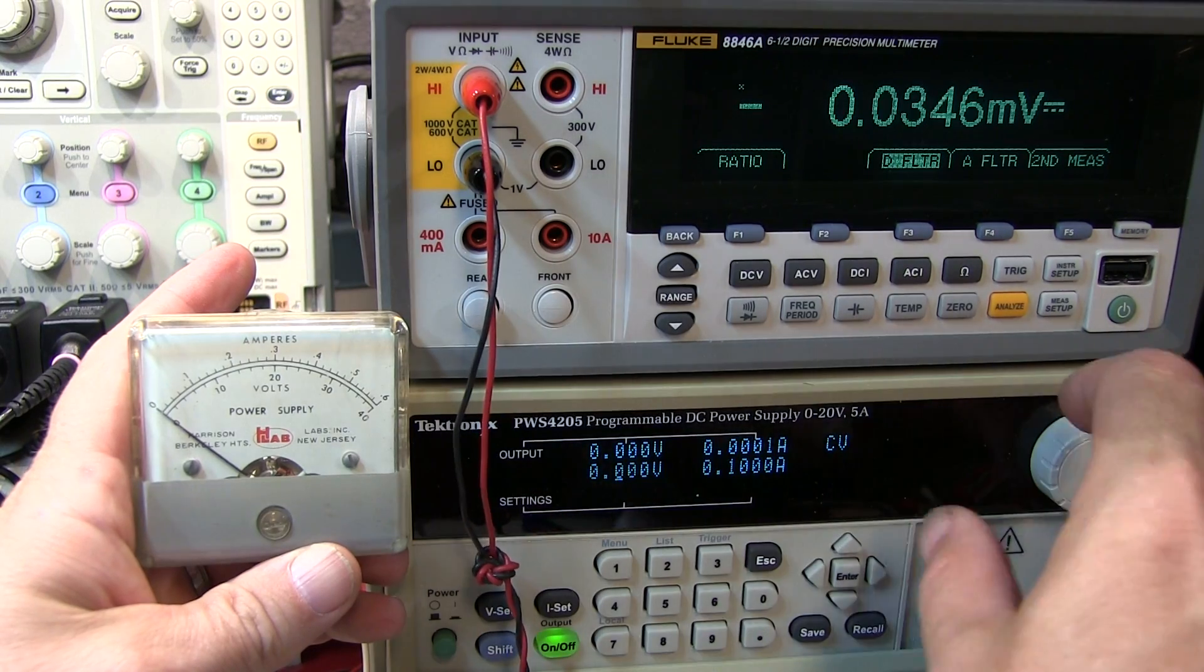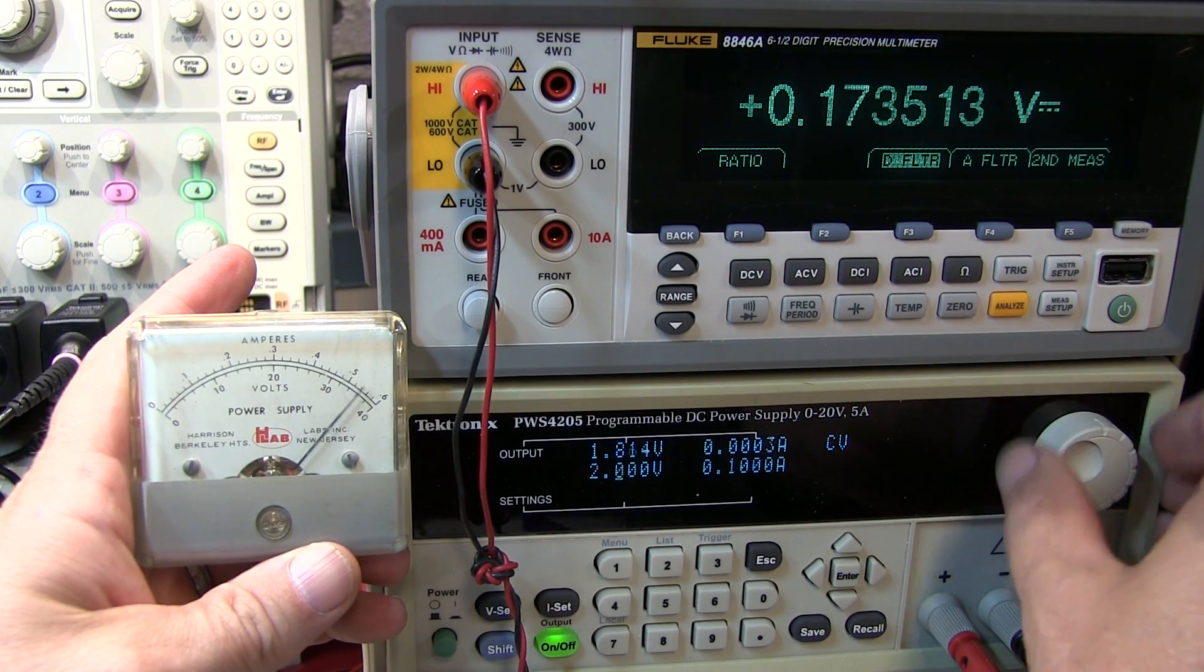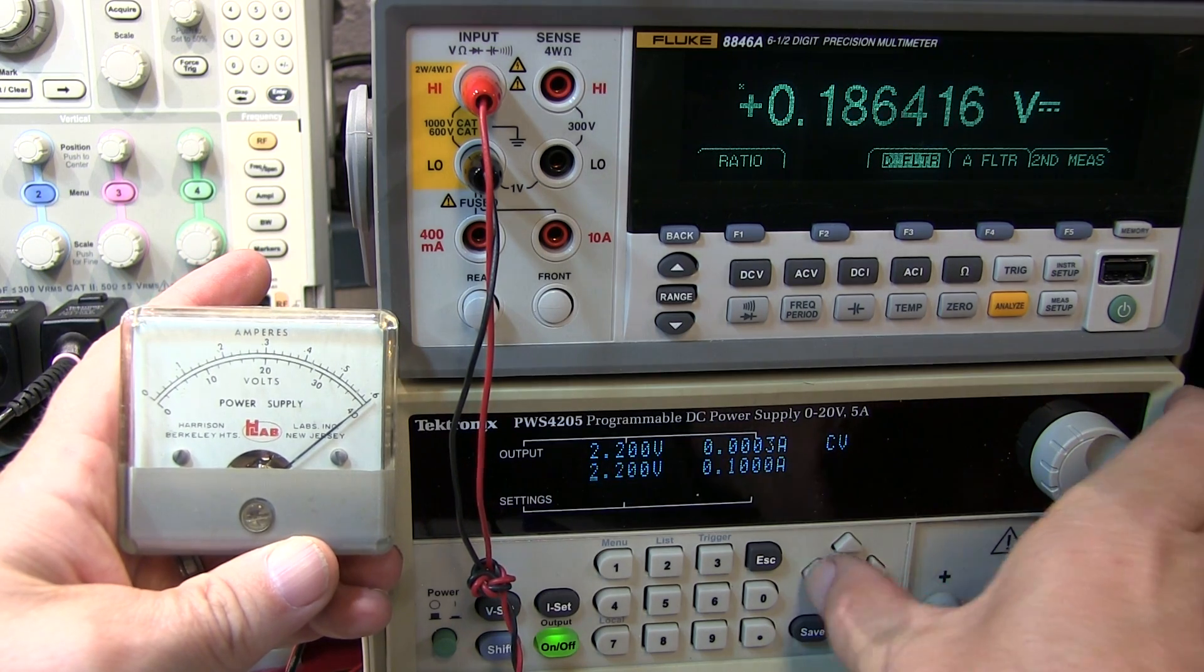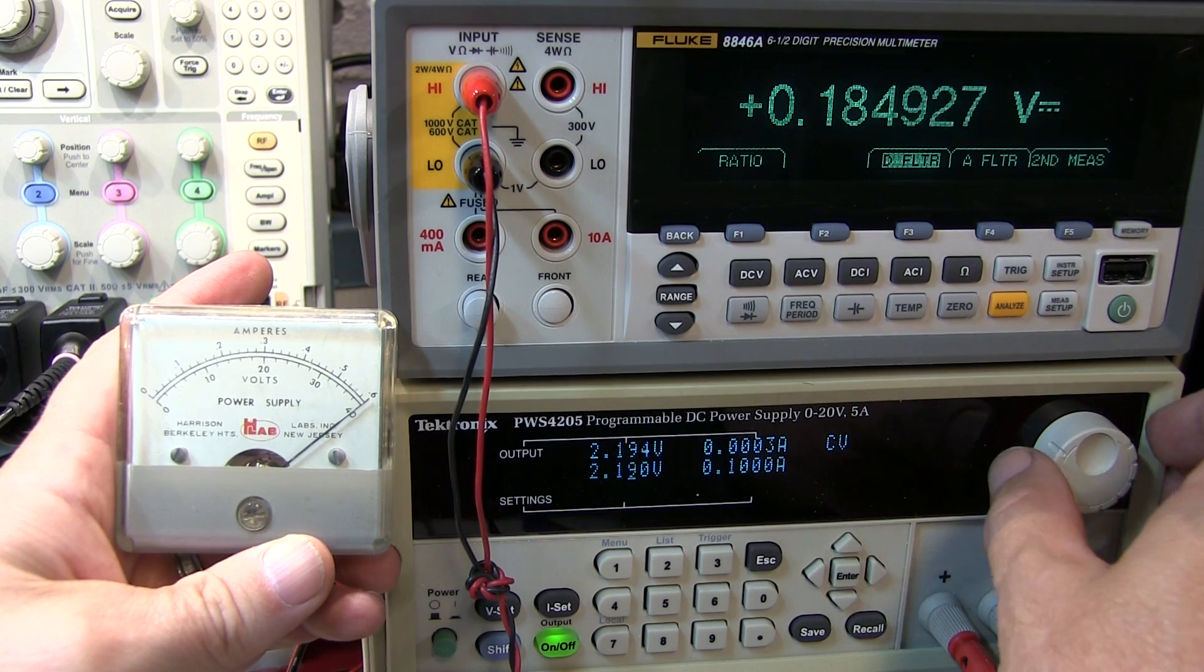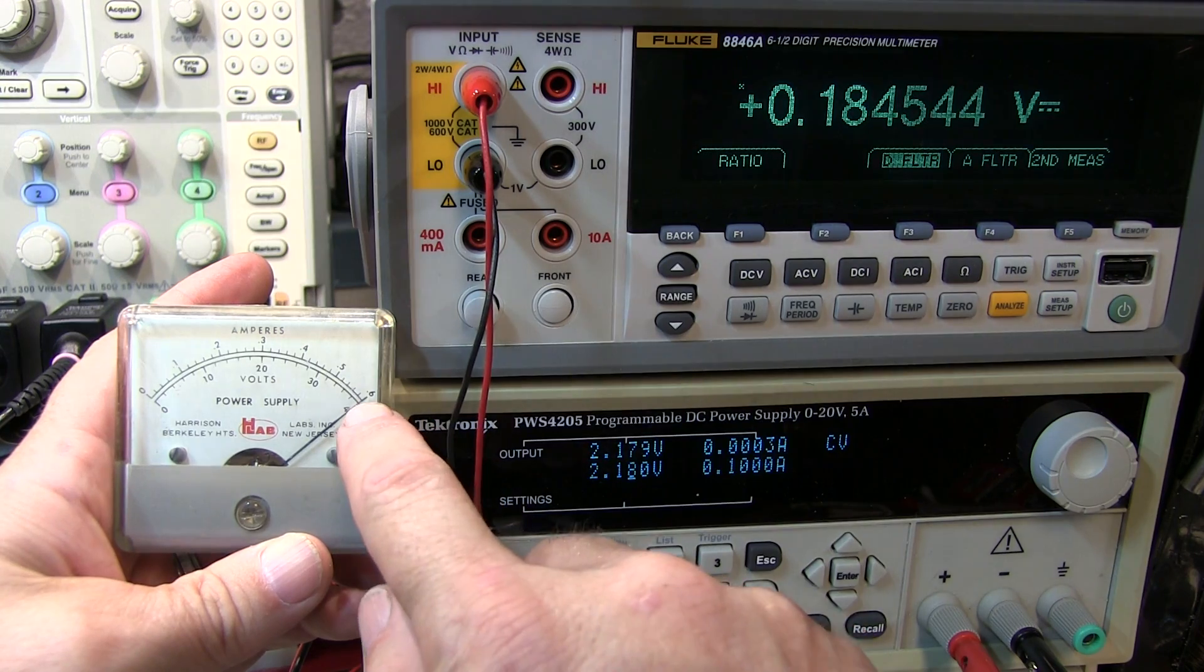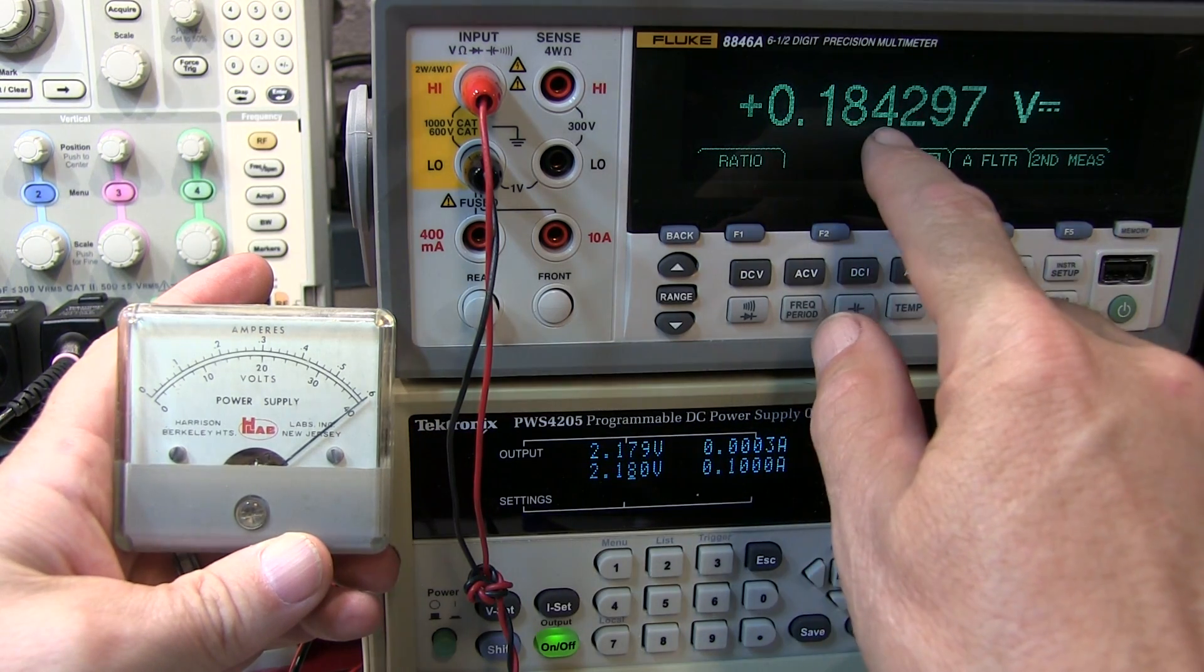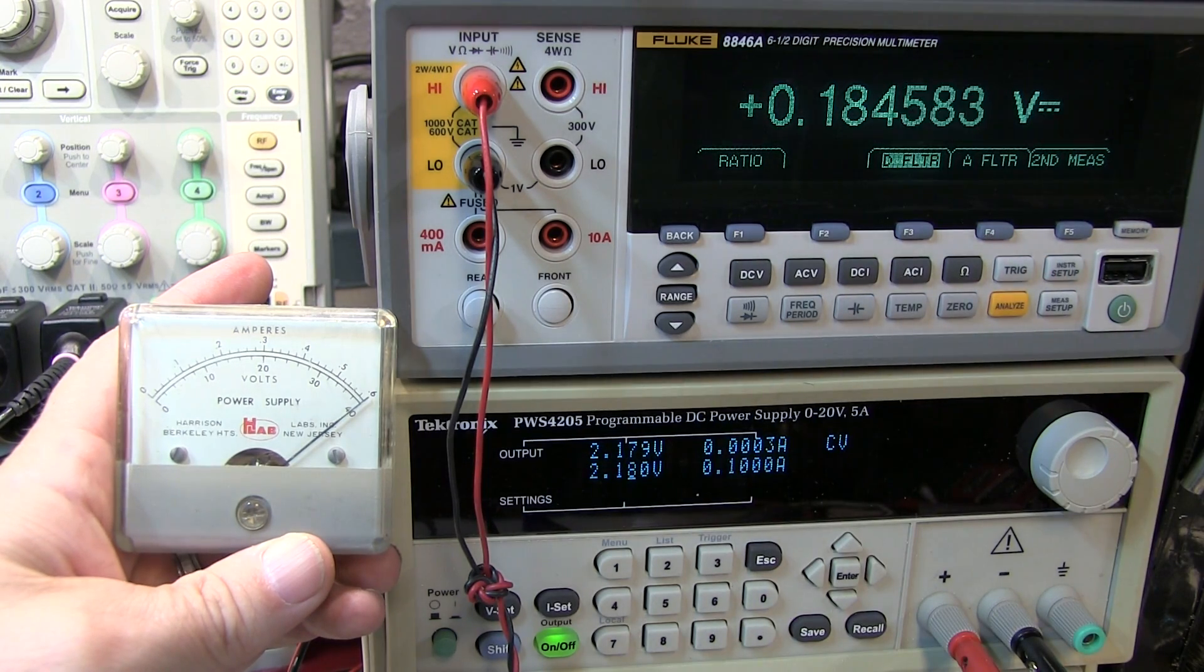Okay, now with the DMM in parallel with the meter, let's adjust my power supply now for a full scale current reading. There's my full scale reading on the meter, and it looks like I'm showing 184, we'll round that to 185 millivolts.